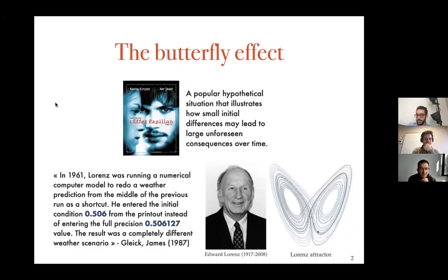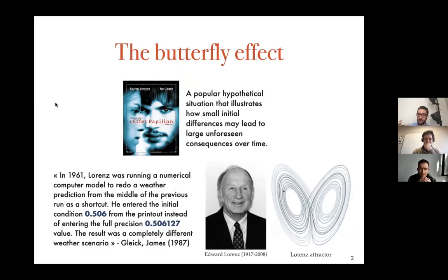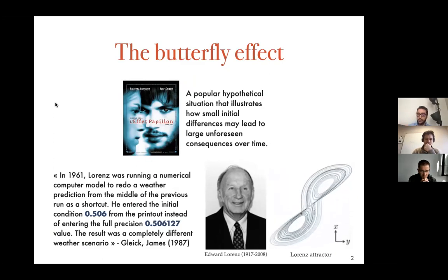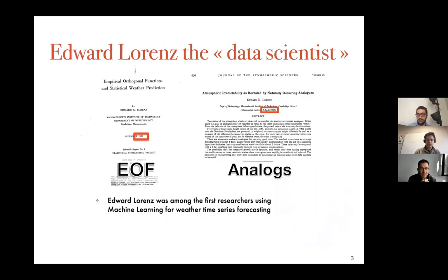I prefer to start with the example of Edward Lorenz, because I see him as one of the first to do machine learning for geoscience — for weather forecasting in particular. You probably know the butterfly effect, but he's also known in the data science and climate modeling interdisciplinary domain for being one of the first researchers to use machine learning for weather time series forecasting. Two of his famous papers: one on EOFs published in the 50s, and the other on analogs published in the 60s.